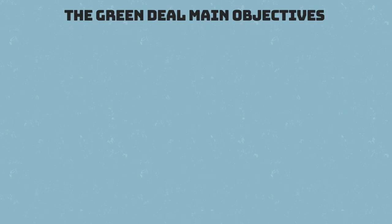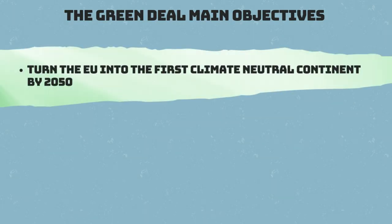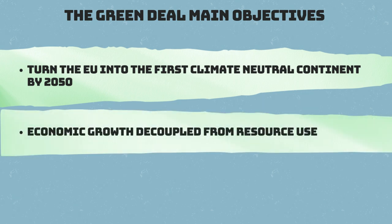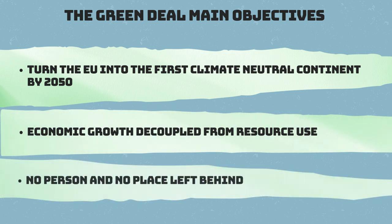The Green Deal's main objectives are: to turn the European Union into the first climate neutral continent by 2050, to achieve economic growth decoupled from resource use, and to ensure no person and no place is left behind.